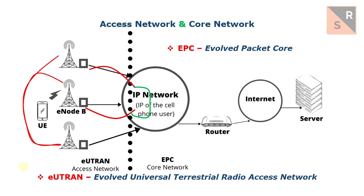Apart from that, we have the core of the network, which is called EPC — Evolved Packet Core. We have seen the E-UTRAN network, which in 4G is relatively simple: there is a single type of equipment, the E-Node B. We'll see in the other videos what makes up the EPC.